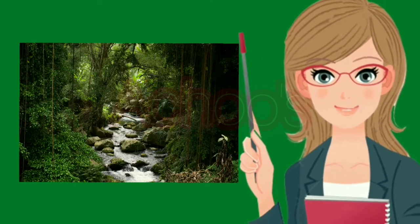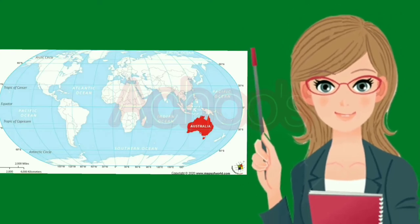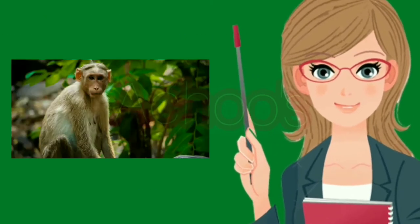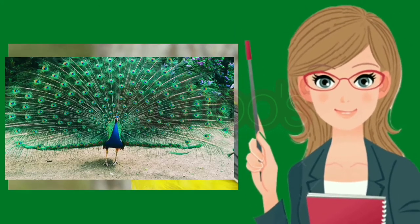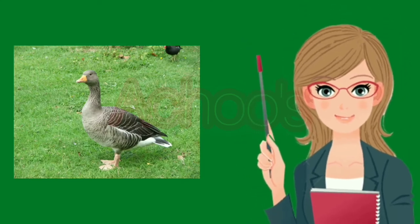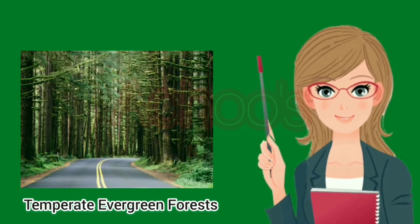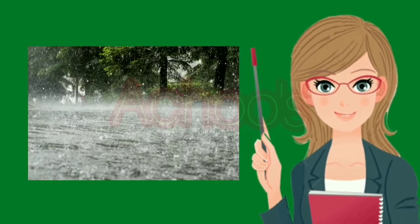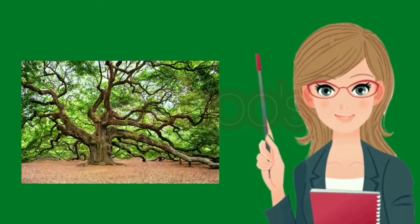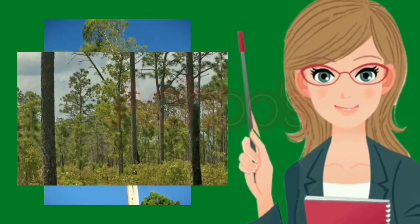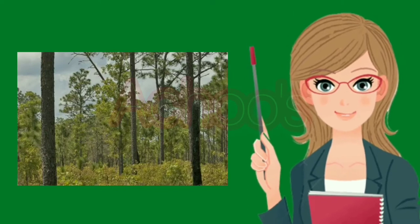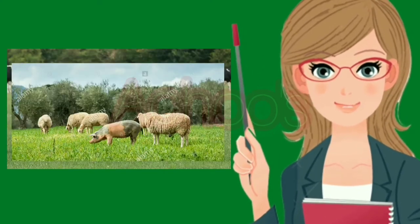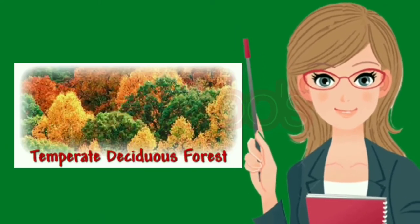These forests are found in the monsoon regions of Asia, Central America, and Northern Australia. Wildlife includes elephants, leopards, lions, tigers, langurs, monkeys, and rhinos. Rich and colorful birds like peacocks, pigeons, and geese are also commonly found here. The third one is the temperate evergreen forests, found between the mid-latitudinal coastal regions that experience moderate climate. These forests receive heavy rainfall in winters while summers are relatively dry. Oak, pine, and eucalyptus are common trees. They are located along the southeastern boundaries of countries like the USA, China, and Brazil. Cattle, pigs, and sheep are common animals found here.